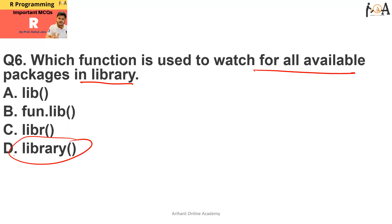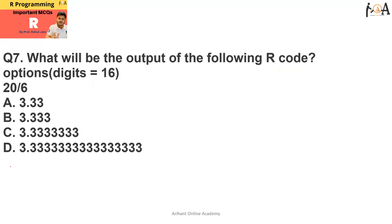Question number seven: what will be the output of the following R code? Here we are using options, and we are using digits equals 16, and 20 divided by 6. If we talk about this, under the option field, if we are using digits equals 16, it means that by default 20 divided by 6 is repetitive in nature. This digits equals 16 assigned inside this option indicates precision factor. Up to 16 digits you need to mention. So obviously, option D is the correct answer. These are 16 digit precision, which is defined under options in R programming.